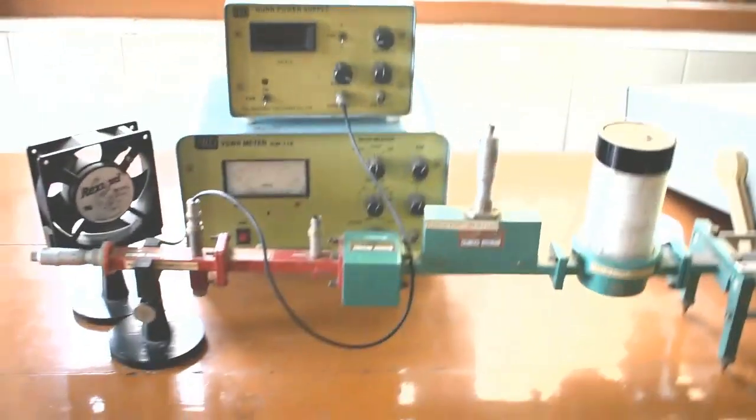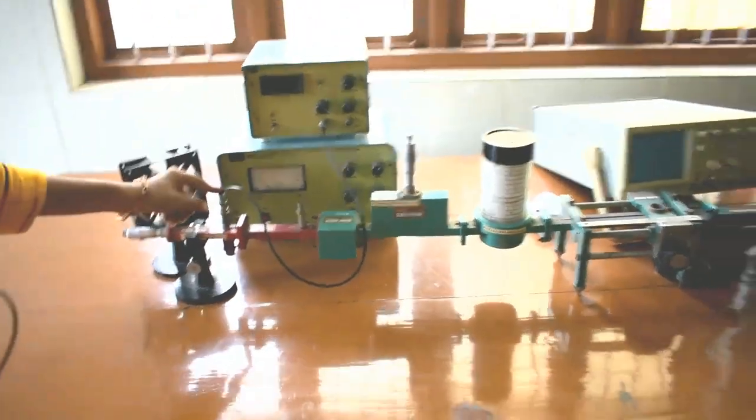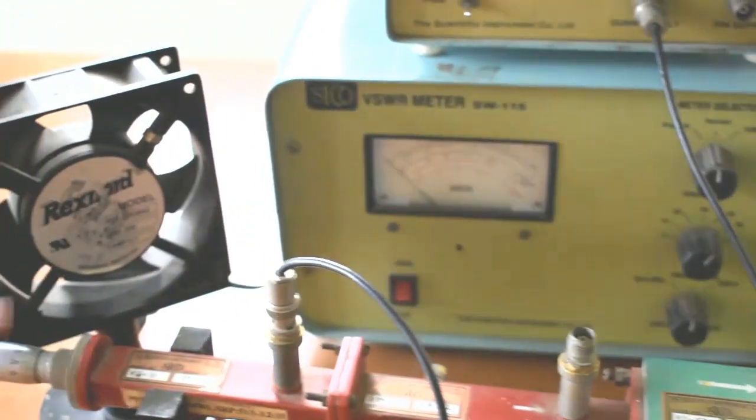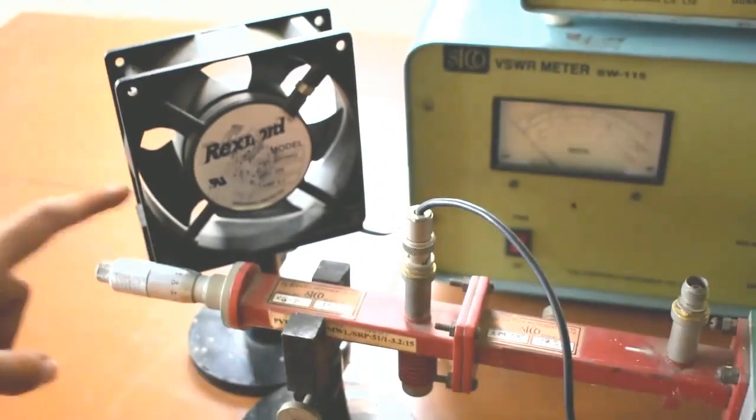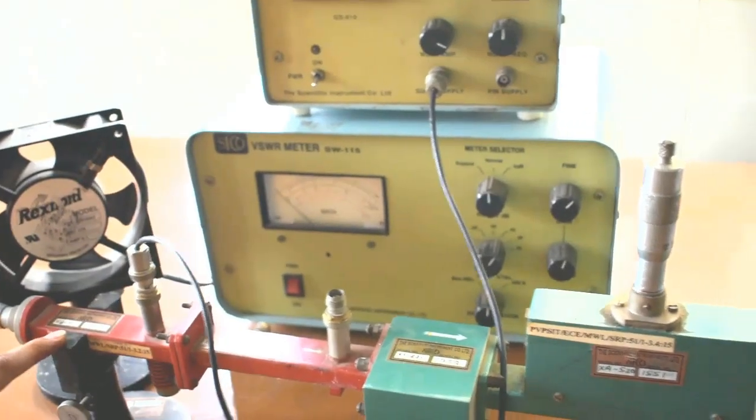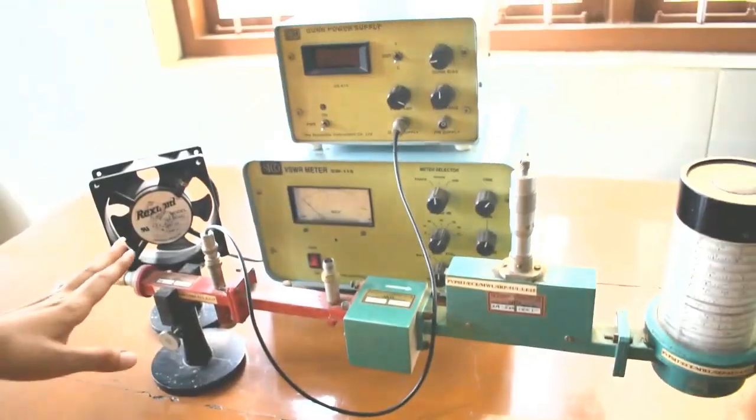Now move on to the next test bench. This is also a similar test bench but it uses the gun diode as a source. As we are using the gun diode as a source here, we are employing the gun power supply. With the use of this microwave test bench, we do the gun diode characteristics measurement experiment.